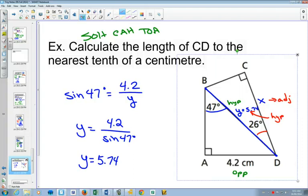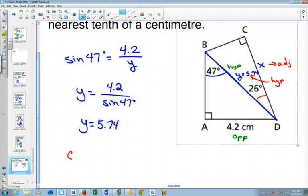So SOH CAH TOA, which one are we going to use? Cosine. So then cosine of 26 degrees is adjacent, which is X, divided by the hypotenuse, which is the 5.74. Multiply both sides by the 5.74.